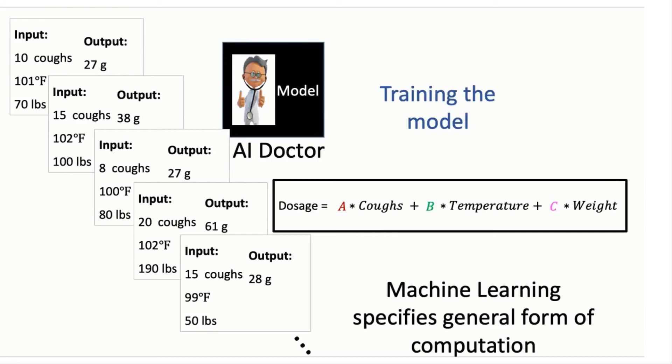The model would then use a learning algorithm to find the exact number for each of the multipliers specified in the mathematical form that we had said the computation would take. The model would then find, for example, that you need to multiply the number of coughs by one, the temperature by 0.03, and the weight by 0.2, and these values would be learned from the data.